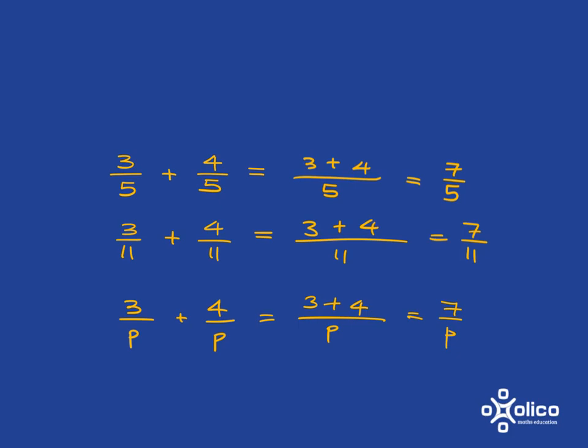And we could also generalize this in a different way. We could see here from looking at this one, if we've got 5 as a common denominator and we've got something over 5 plus something different over 5, our answer is just going to be, well, you've got a common denominator of 5 and then you just add the two things together at the top.